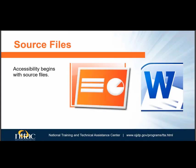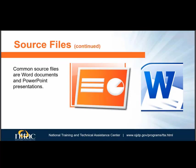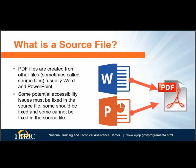Let's first talk about source files. Accessibility begins with accessible source files — for instance, files created in Word or PowerPoint. Common source files are Word documents and PowerPoint presentations. PDF files are never created as PDF files; you need some sort of source file, such as Word or PowerPoint, and convert it to a PDF. Other possible sources are Excel, InDesign, and HTML, but this training does not cover those source files.